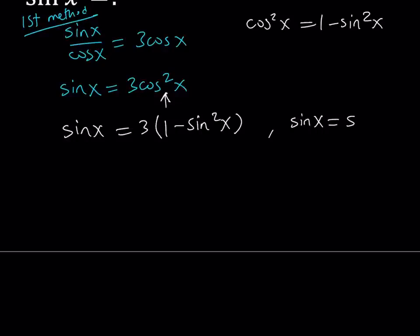Now, I'm going to replace sine of x with s. So we don't have to write this every time. So s equals 3 minus 3s squared. And let's put everything on the same side. So we get 3s squared plus s minus 3 is equal to 0.